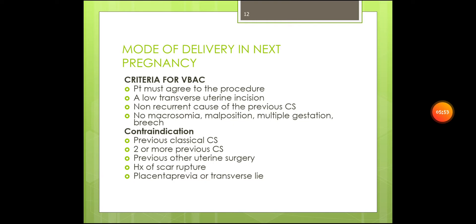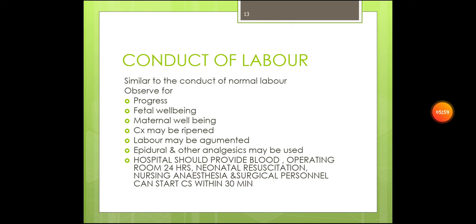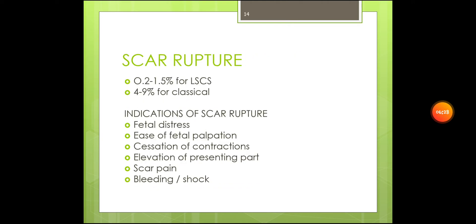The conduct of labor for vaginal birth after C-section is similar to normal labor. You observe for progress, fetal well-being, and maternal well-being. The cervix may be ripened, labor may be augmented, and epidural and other analgesics may be used. The hospital should provide blood, an operating room available 24 hours, neonatal resuscitation, and nursing, anesthesia, and surgical personnel. A cesarean section can be started within 30 minutes.